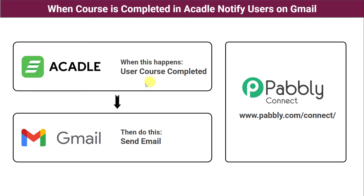First let us understand what these software applications are all about. The first application we are using in this automation is Acadle, which is an online learning management software where we can build courses and academies with multiple lessons. The second application we are using is Gmail, which is an email service provided by Google.